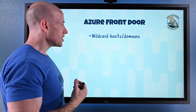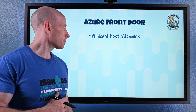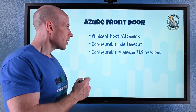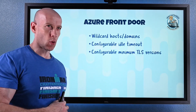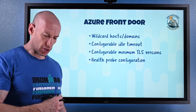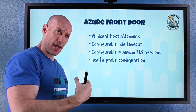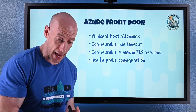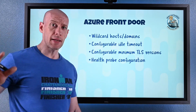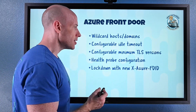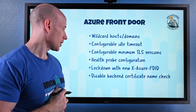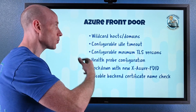Azure Front Door now supports wildcard host domains, so you can have something like *.something. There's a configurable idle timeout — how long it waits for initial packets. Configurable minimum TLS versions, so if compliance requires a minimum TLS version you can set that. The health probe configuration now supports HEAD requests instead of GET, which means less bandwidth and less cost. If you only have one backend you can skip the health probe altogether. There's also a lockdown feature using a new Azure Front Door ID sent in the header, and you can disable backend certificate name checks.